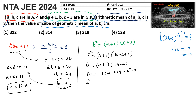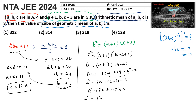Expanding: 64 equals 19a plus 19 minus a squared minus a. Rearranging: a squared minus 18a plus 64 minus 19 equals 0, which simplifies to a squared minus 18a plus 45 equals 0. Factoring: a squared minus 15a minus 3a plus 45 gives a times (a minus 15) minus 3 times (a minus 15).